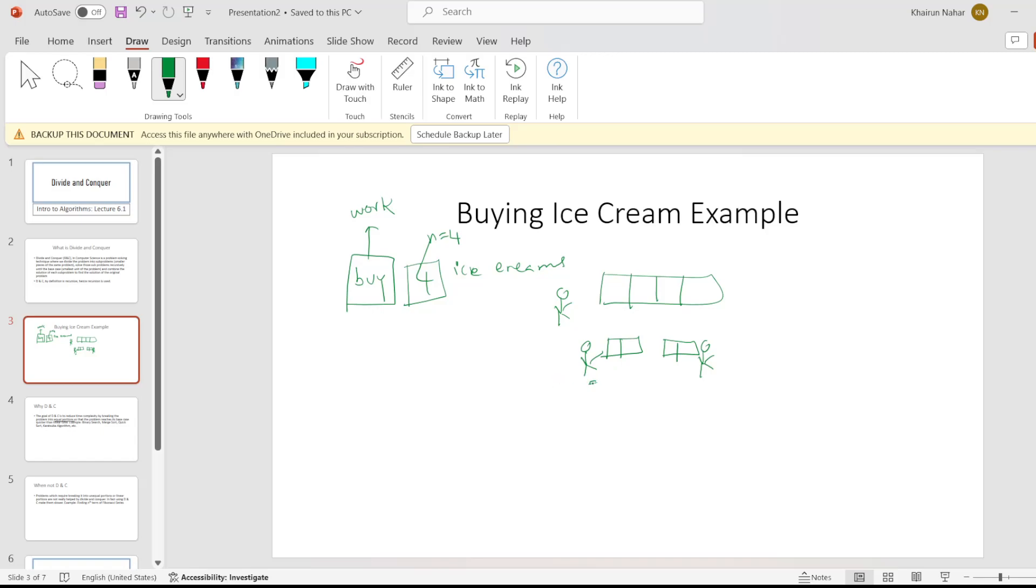So my friends are lazy like me. So each friend asks two more friends to buy one ice cream each. And this friend did exactly the same thing, divided the work into two portions and gave them to his friends.